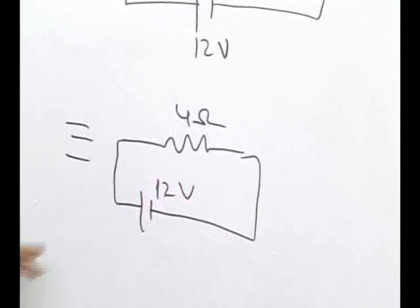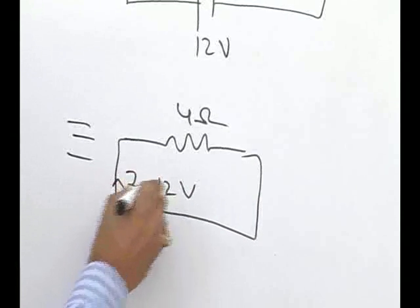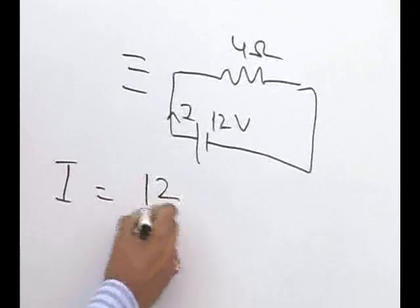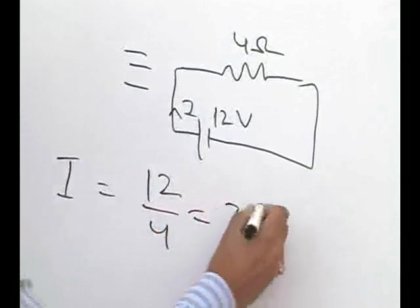So the current in the circuit, the net current I that is flowing into the overall circuit, is given as 12 by 4, that is equal to 3 amperes.